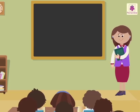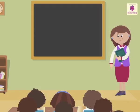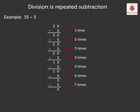Today, let us revise division and its facts. We know that division is actually repeated subtraction. Let us understand it with an example of 35 divided by 5. Look at this.